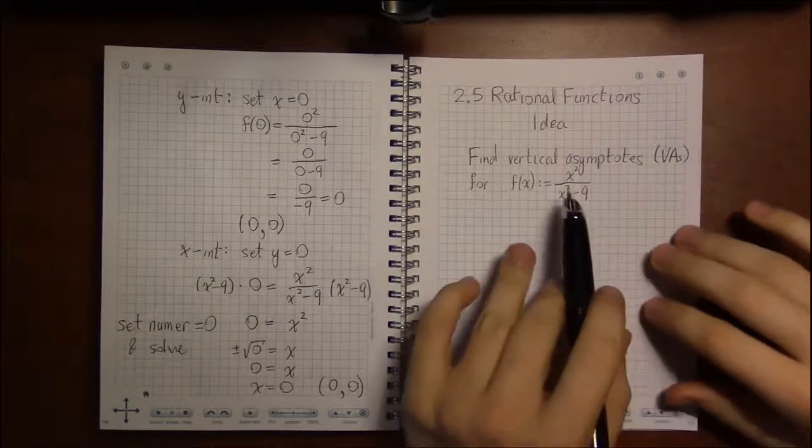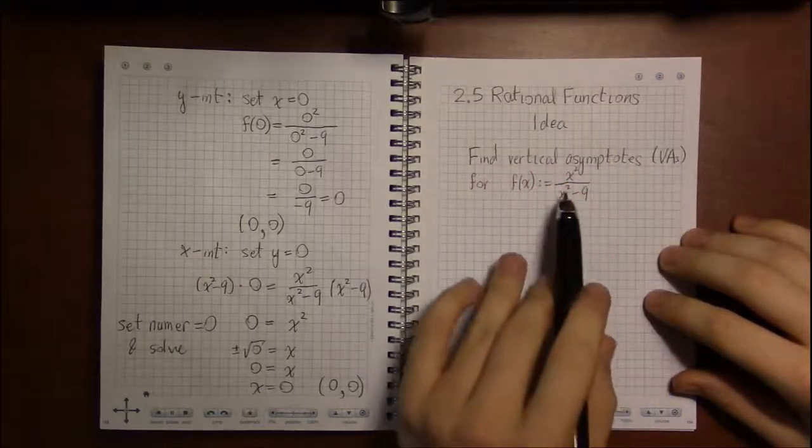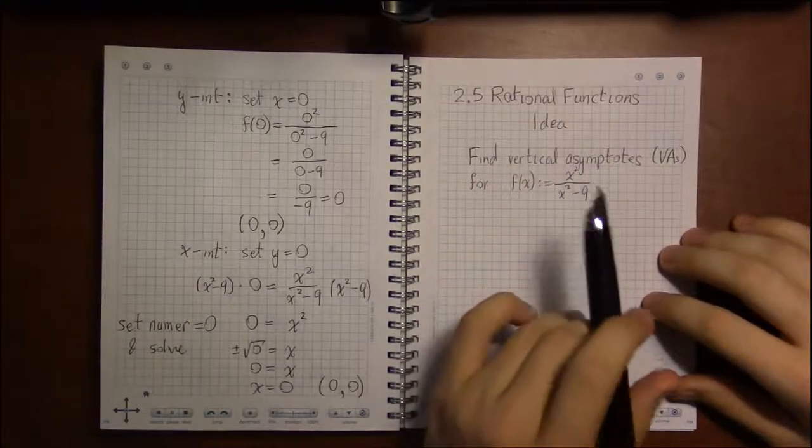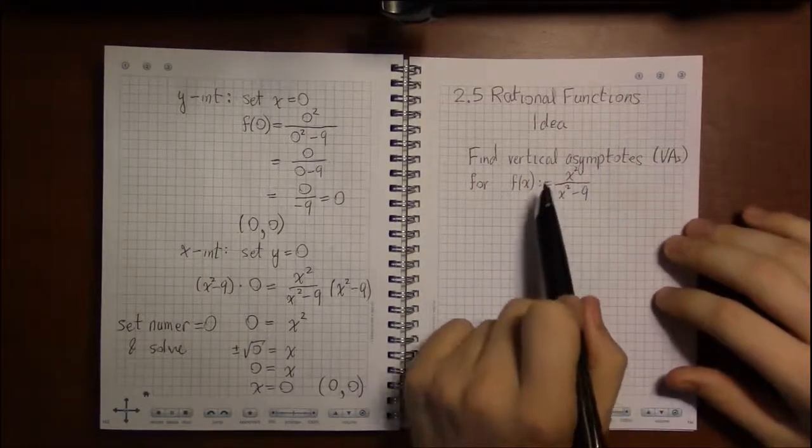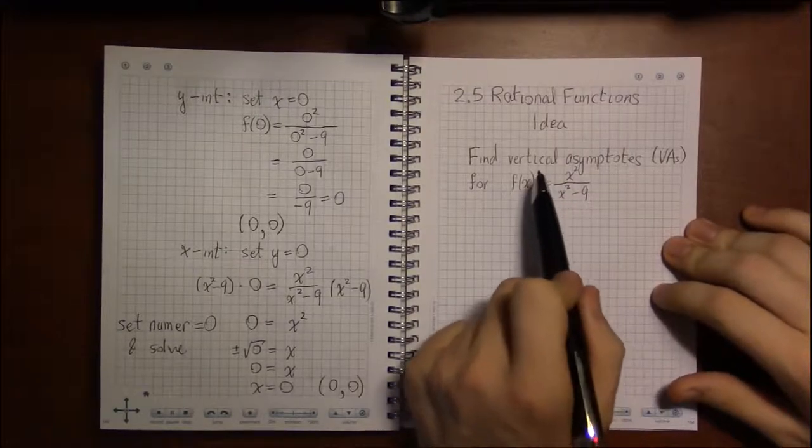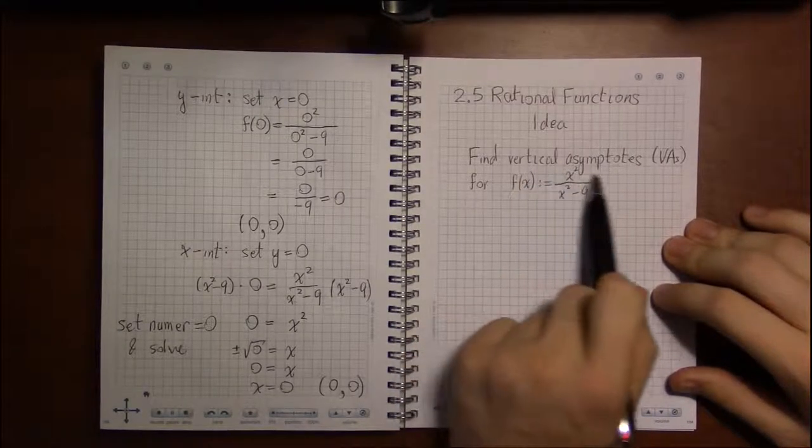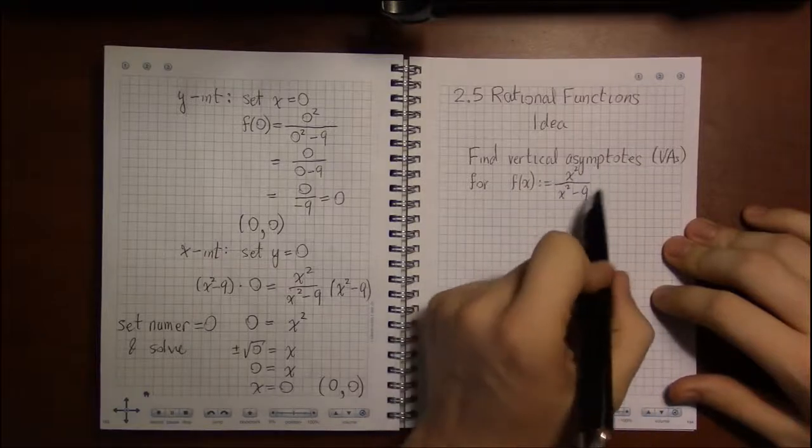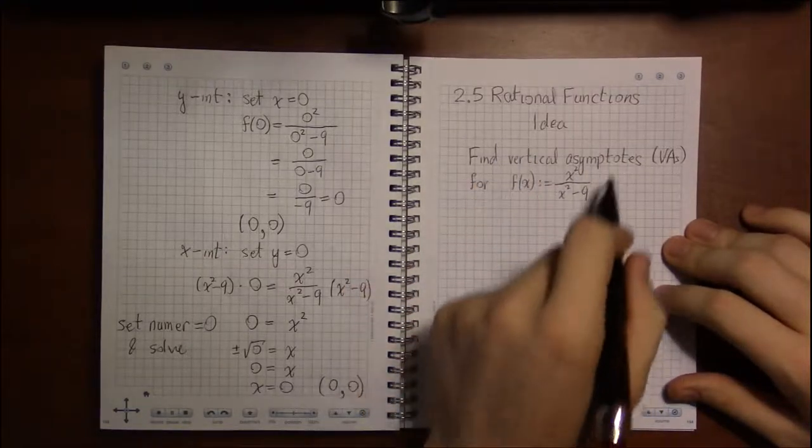Alright, the other features of rational functions that we introduced in the last video are the asymptotes. And first we're going to deal with the easier of the two, the vertical asymptotes, those dotted lines that went up and down.